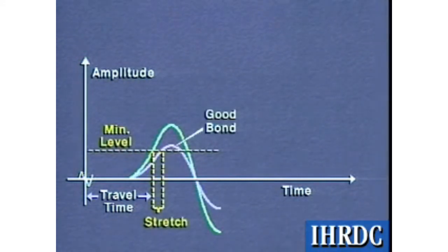When the signal is reduced due to a good bond, the travel time signal stretches, since the minimum amplitude level is not reached until a later time. This is known as cycle stretch.